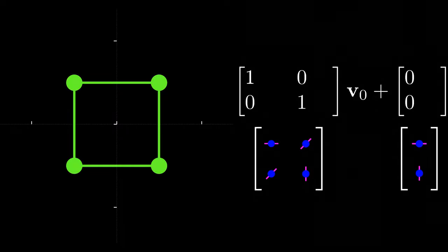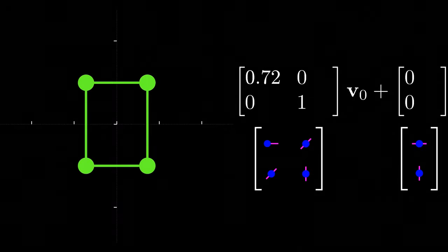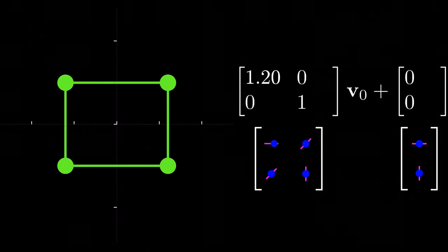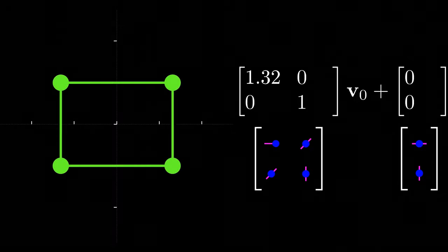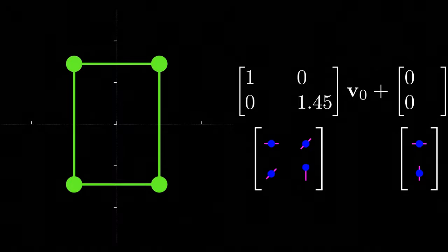So we might start with the identity matrix without any xy offset and then push on the dial corresponding to the upper left hand element. Here we see that it corresponds to a scaling along x. Similarly the bottom right hand element scales along y.